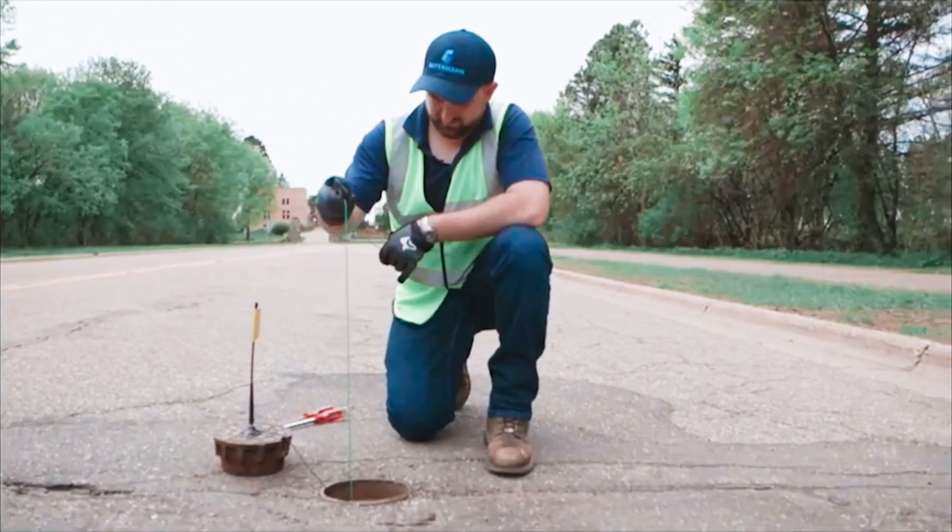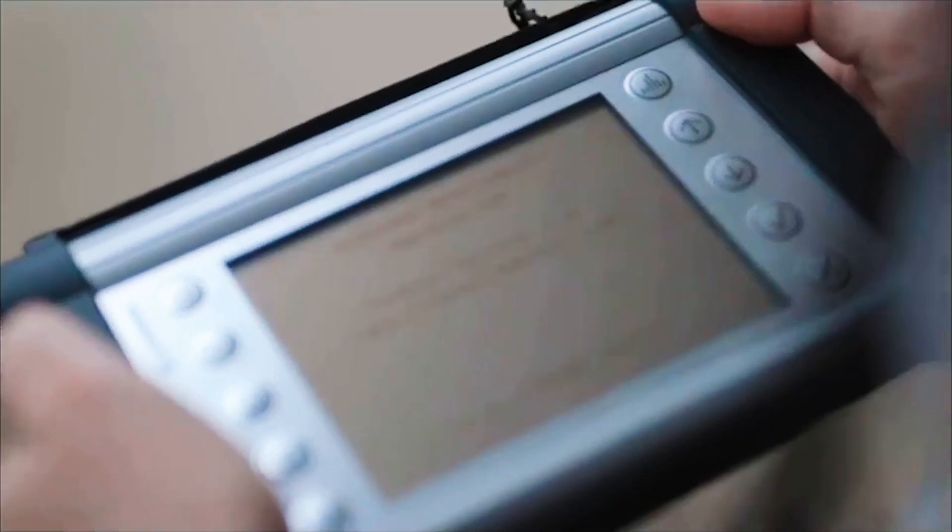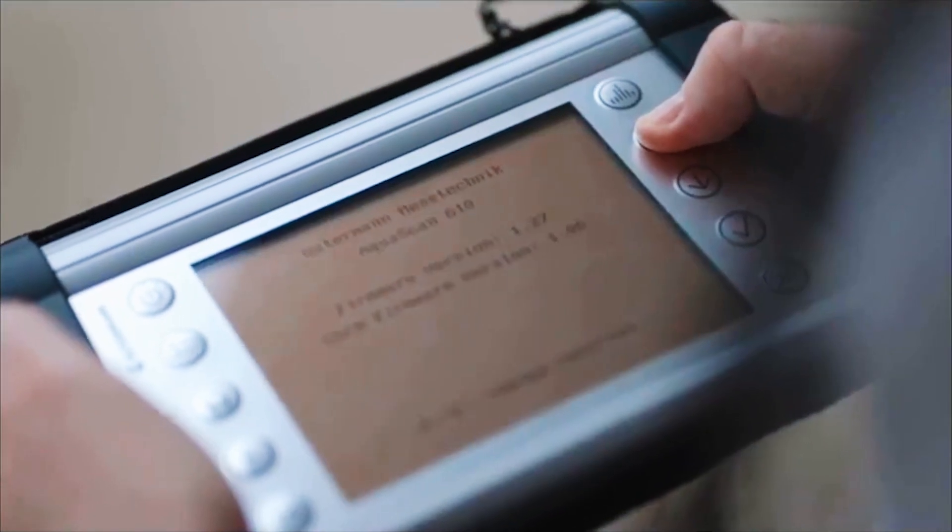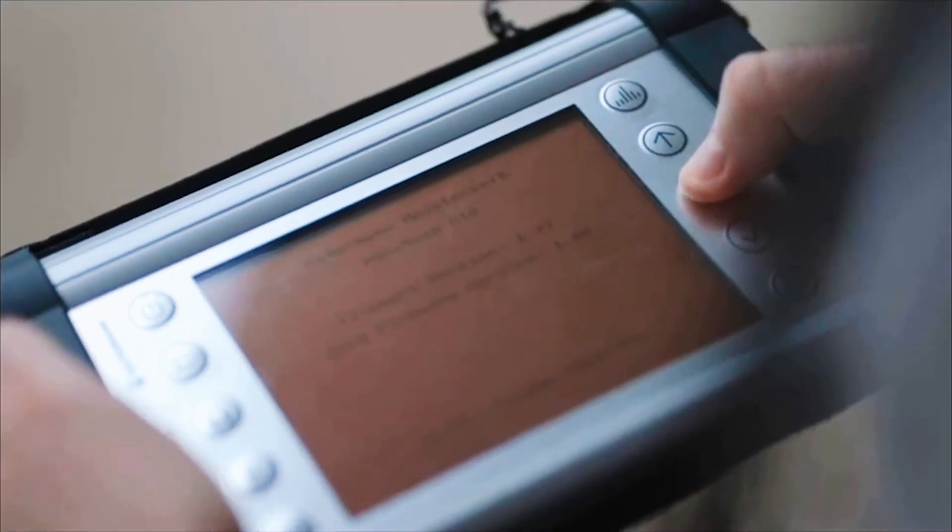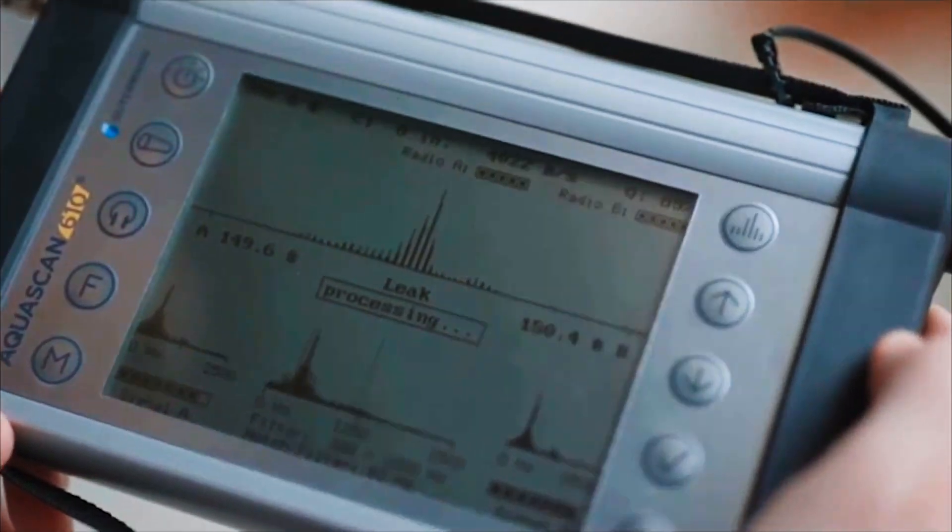The AquaScan 610 processor is turned on by pressing and holding the power button for two or three seconds. The screen will activate and open to the main operation screen. All of the functions are activated by the push buttons.